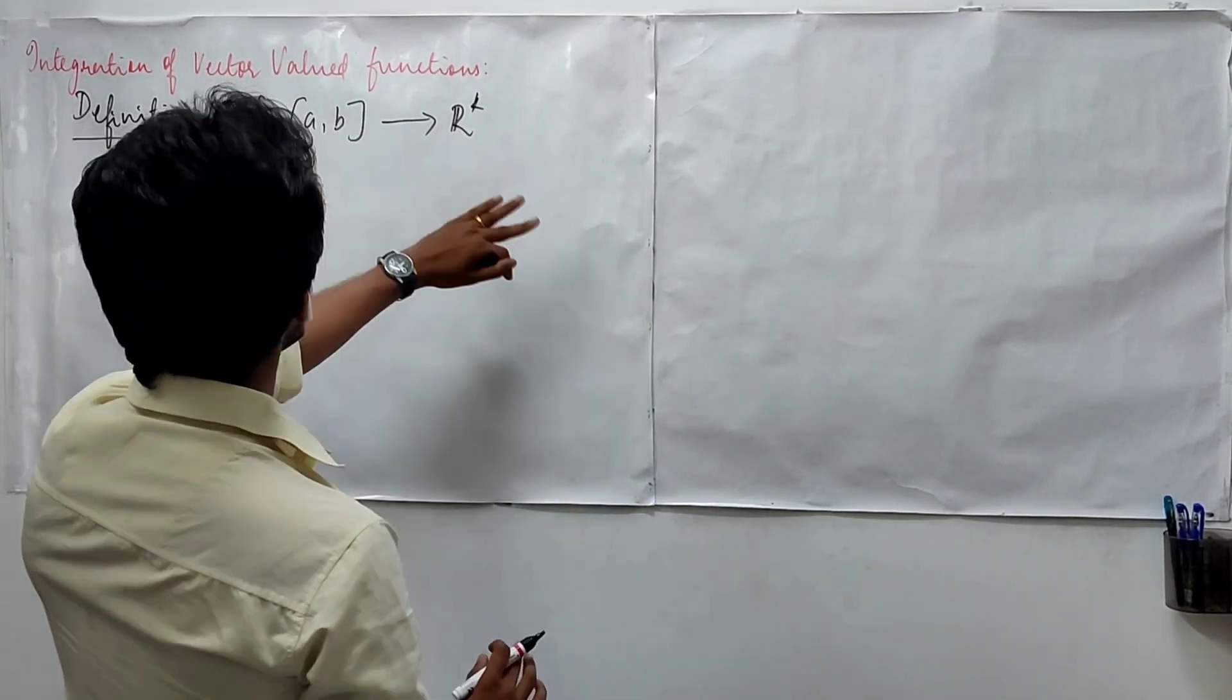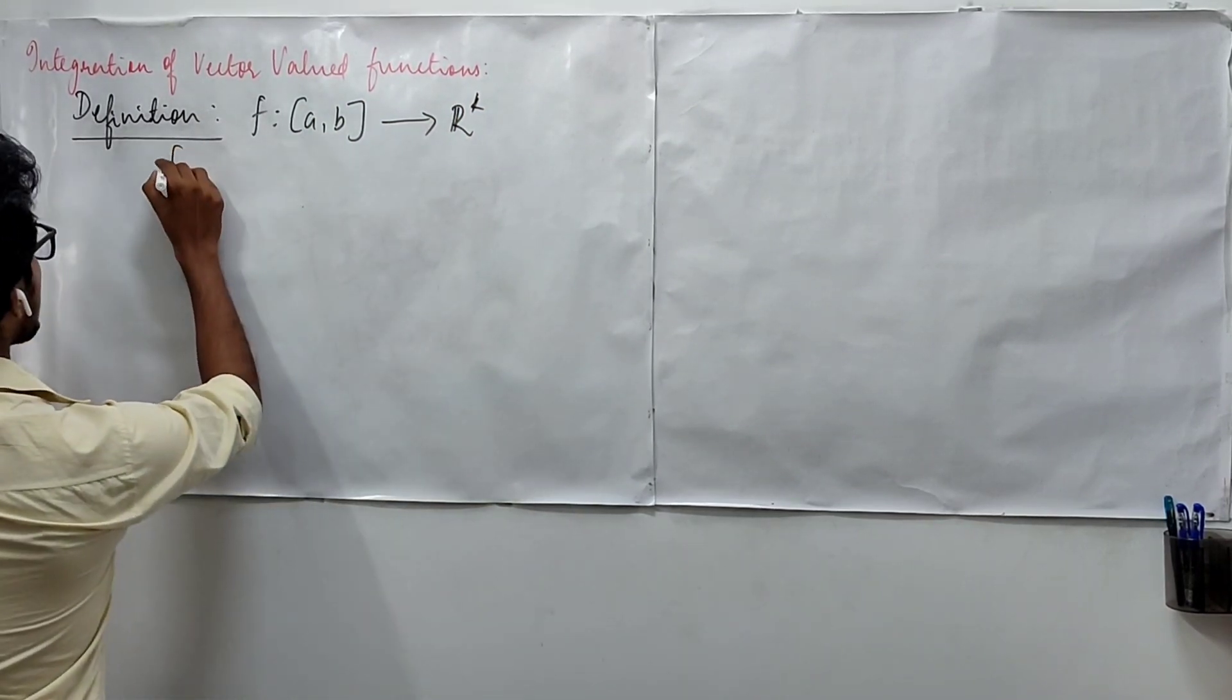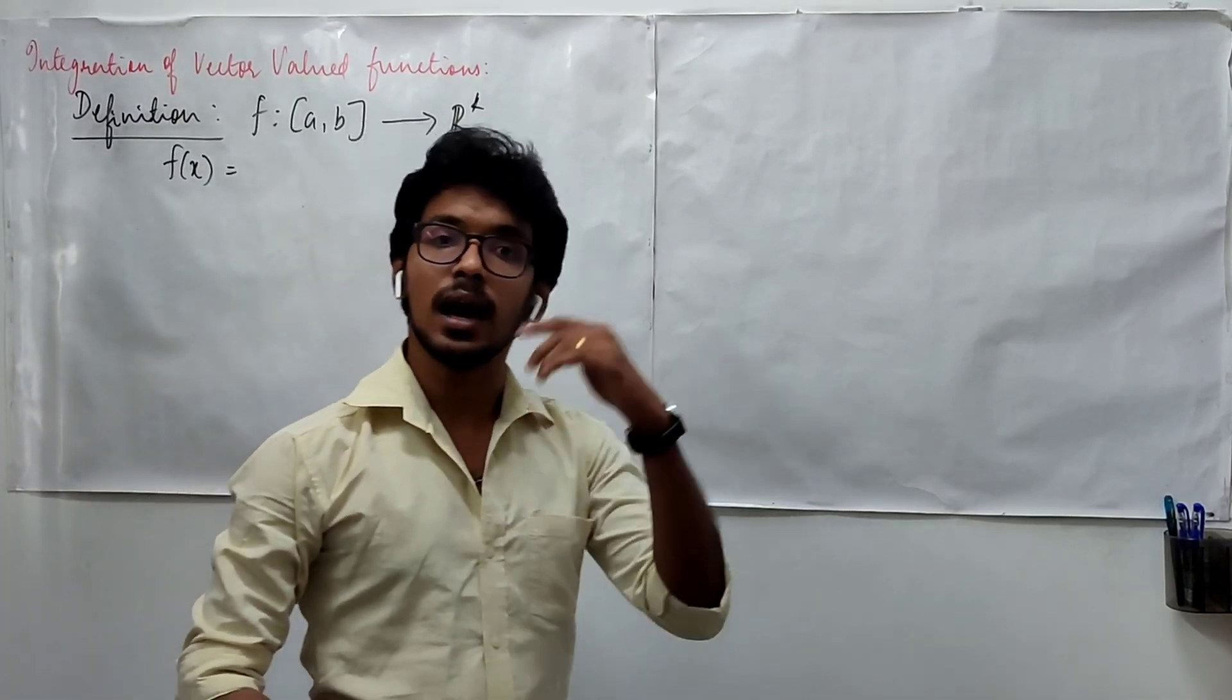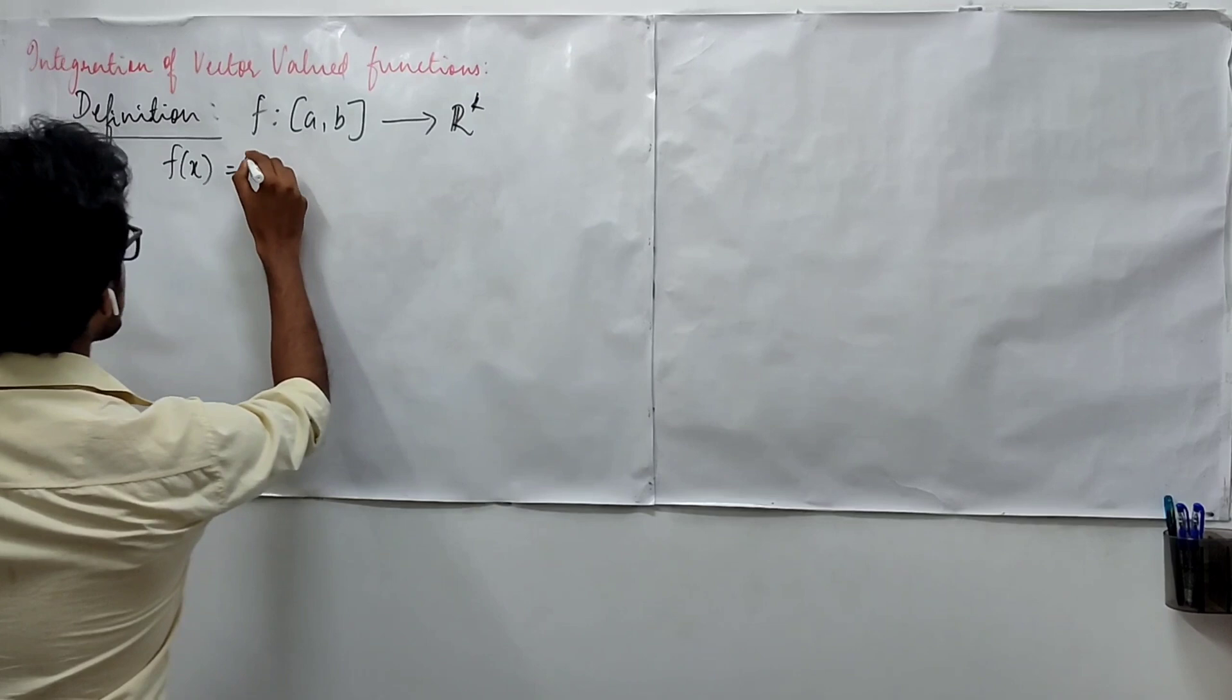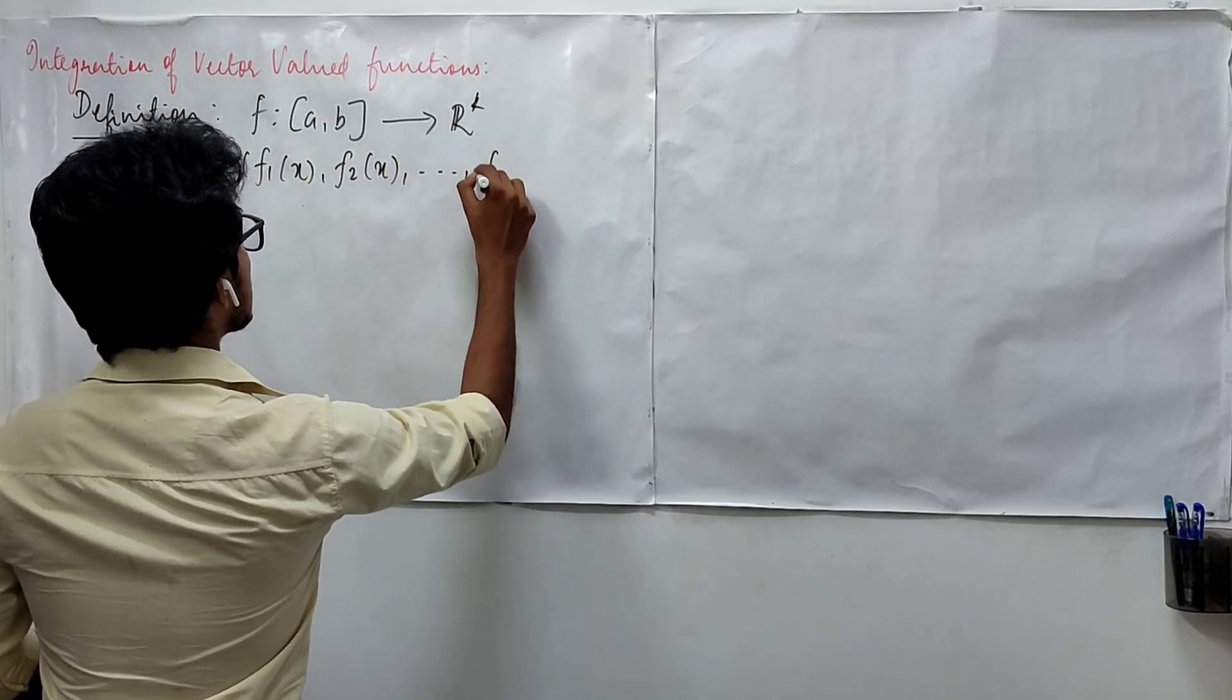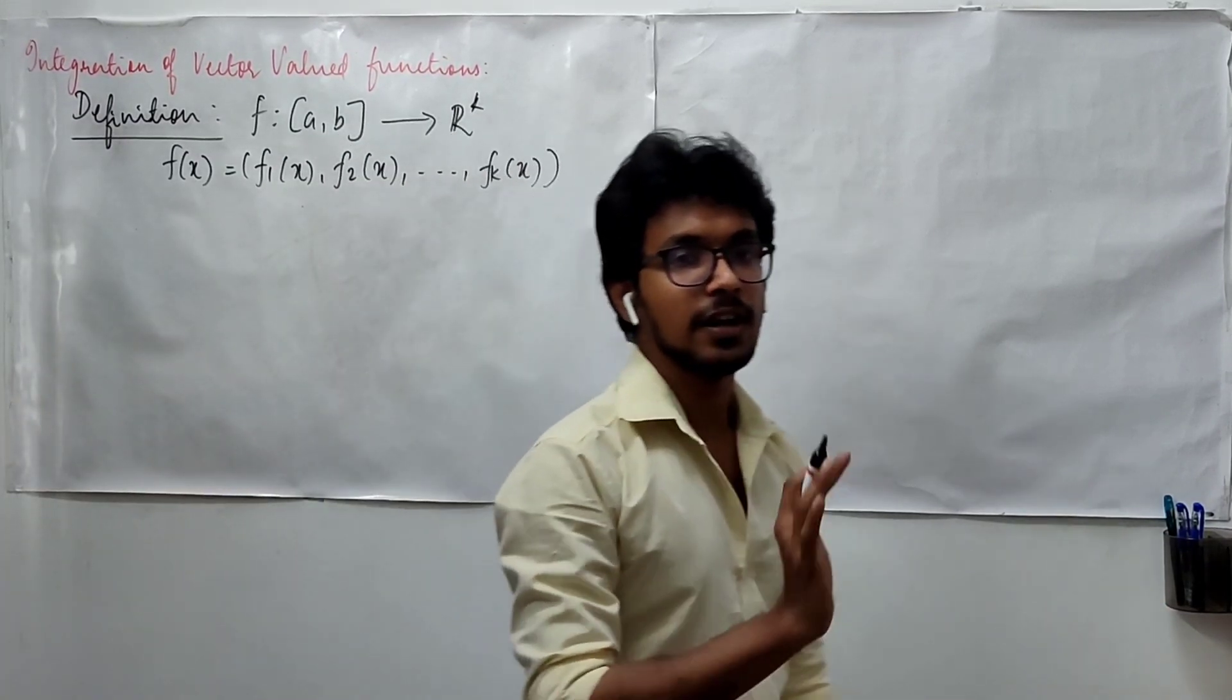This is different from a to b to R^k, which means it is going to take any value and map it to some element in R^k. This is an element in R^k which has k coordinates and all this can be treated as a function of x.